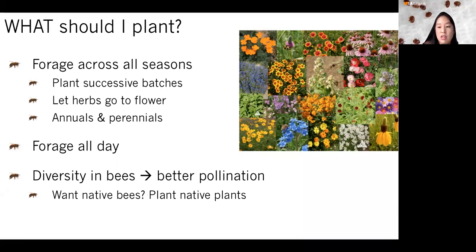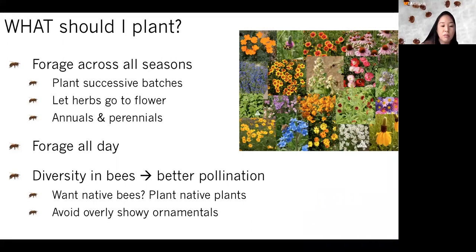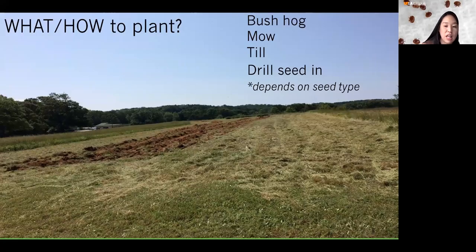Studies looking at native plant habitats have shown really low levels of honeybee visitation, so if you're planting specifically for honeybees, consider including some non-native, non-invasive plants as well. Also avoid overly showy ornamentals, as they've typically been bred for characteristics humans like — double petals, for example — that aren't what bees are after. Stick to more natural versions of plants so pollinators can truly benefit from them.